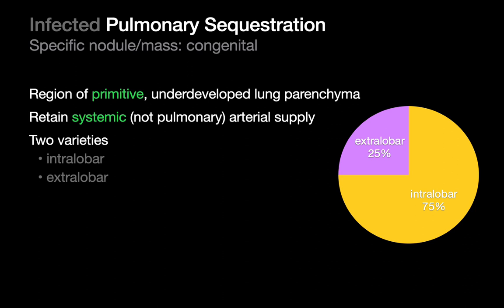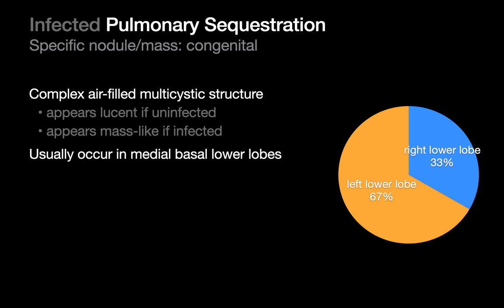These areas of primitive lung retain their systemic arterial supply, so they get most of their blood flow not from the pulmonary arteries but from a systemic source — from the aorta or a branch off the aorta. These have traditionally been divided into two categories: intralobar sequestrations and extralobar sequestrations. They are usually cystic structures that may look mass-like when they become infected, tending to be found at the medial lung bases.